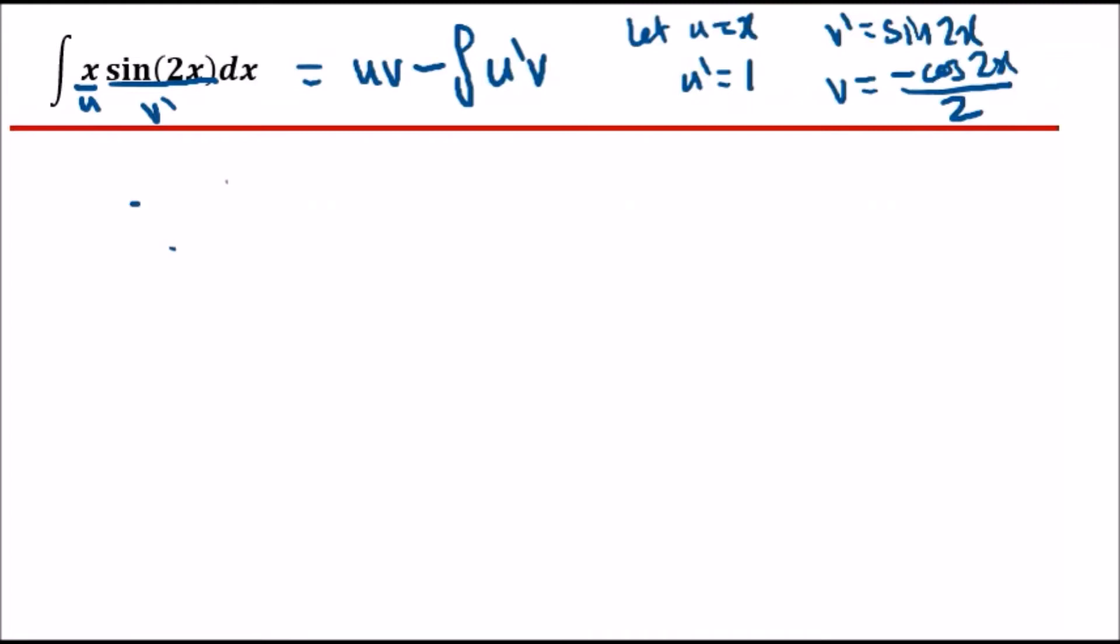Now let's get back to the question. So therefore we can say that uv, so u times v, will be x times minus cos 2x over 2, so I can just say minus half x cos 2x just to make it look a bit nicer.